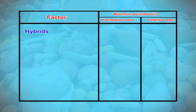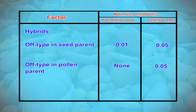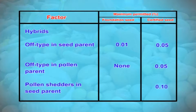In case of hybrids, the maximum permitted percentage of off-type in the seed parent is 0.01% in the foundation stage and 0.05% in the certified stage. The maximum permitted percentage of off-type in the pollen parent is 0% in the foundation stage and 0.05% in the certified stage. The maximum permissible limit for pollen shedders in the seed plant is 0.1% for the certified stage, while for the foundation stage, pollen shedders should be completely absent.